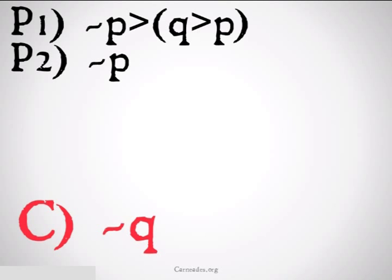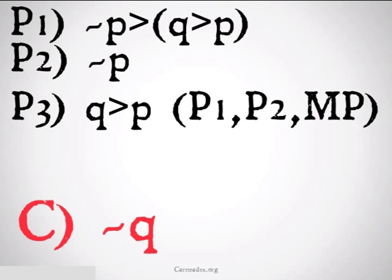So from this we should be able to see pretty clearly that premise 2, not p, is the antecedent of premise 1's implication. It's the first part of that implication. And if we remember from modus ponens, if we have the first part of an implication and we have that implication, we're allowed to conclude the second part, the consequent of that implication, which is exactly what we're going to do. In order to write this next premise, I'm going to write out what I want to conclude, which is q implies p,